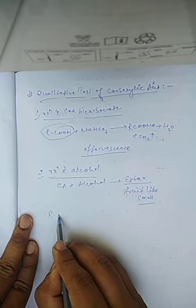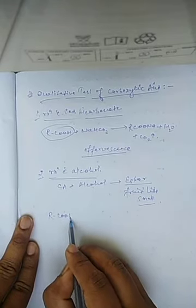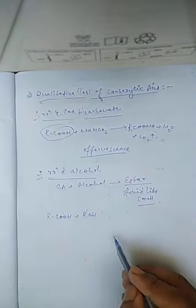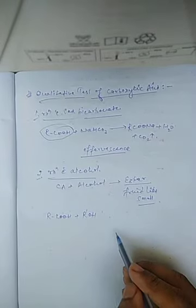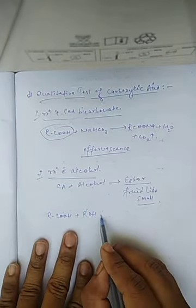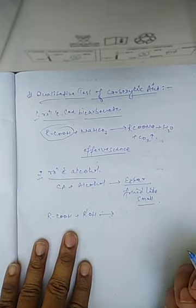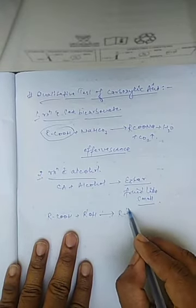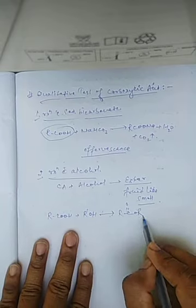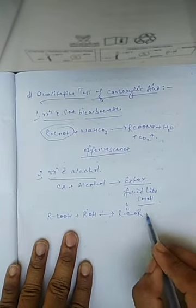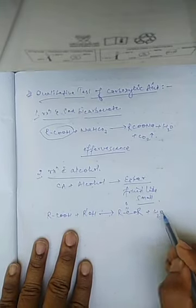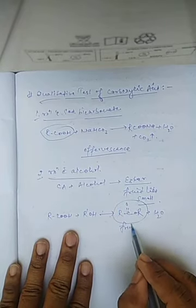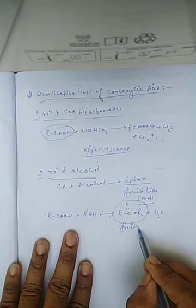For example, if this is your carboxylic acid and this is your alcohol, then what will happen — it produces the ester as well as water, giving a fruity smell.